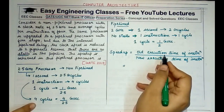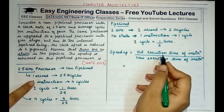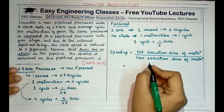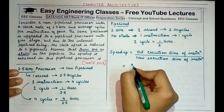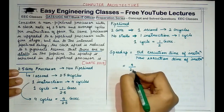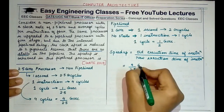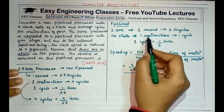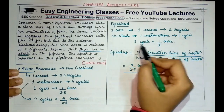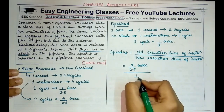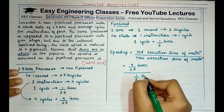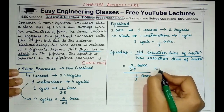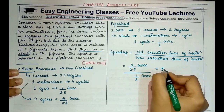The old execution time: one instruction was taking 4 cycles, and 4 cycles needed 4/2.5 GHz to complete. So the old execution time was 4/2.5 GHz. The new execution time is 1/2 GHz, since one instruction takes one cycle. The correct speedup value comes out to be 3.2.